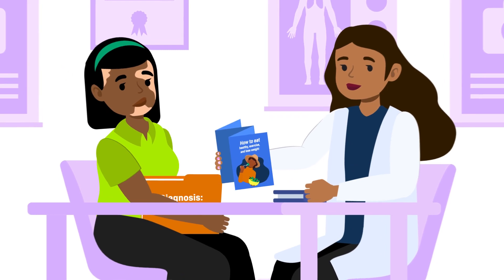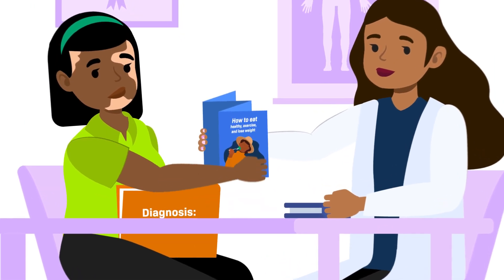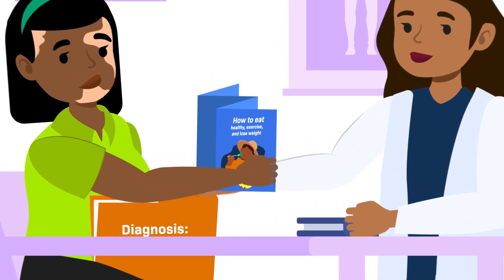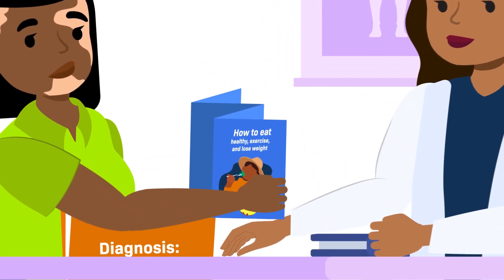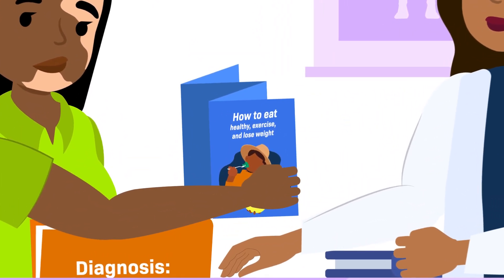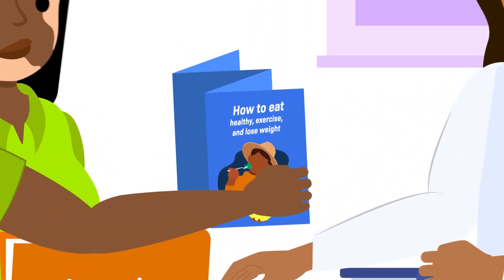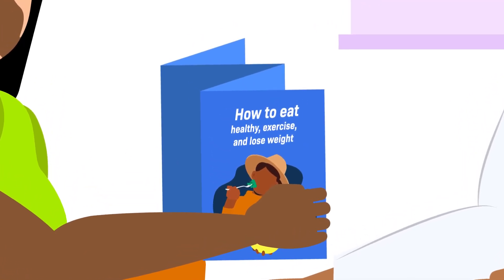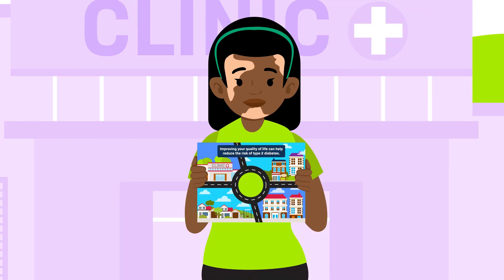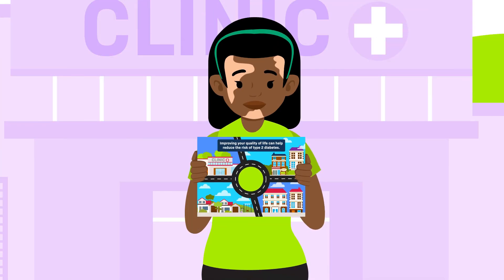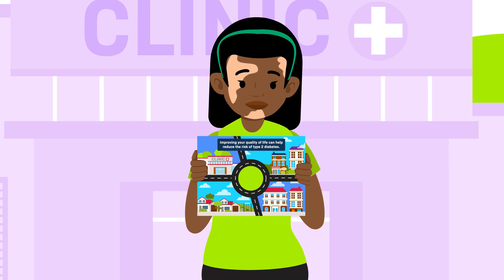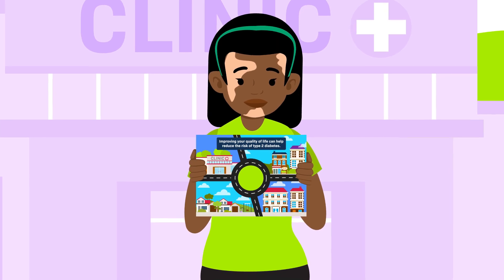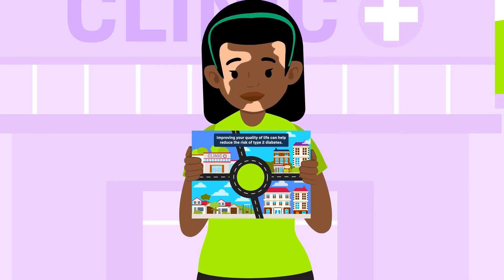Having access to resources like nutritious foods and safe outdoor areas for exercise helps people maintain a healthy weight, which is key to preventing type 2 diabetes. However, several social factors can prevent people from having access to healthy food and lifestyle choices.